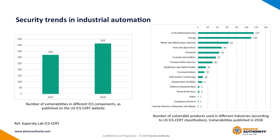This slide — I took some of this data from Kaspersky Labs, which covers industrial control systems details. On the left-hand side you can see a number of vulnerabilities: in 2017 there were 322, and in 2018 there were 415. So the picture here is that the number of vulnerabilities coming out is growing — between those two years, 30%. And the more interesting thing, if you look on the right-hand side, is where those types of vulnerabilities are found and what types of equipment they're found in.